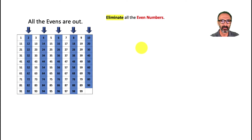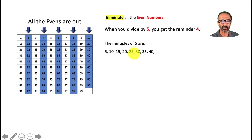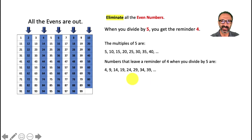Sometimes in math you want to go straight step by step, but here I'm actually jumping to the last condition: when you divide by 5 you get a remainder of 4 — instead of dividing by 3 first. There's a reason for that. Numbers that leave a remainder of 4 when you divide by 5 are: 4, 9, 14, 19, 24, and so on. I have this on the slide so you can see them on the table with more confidence.